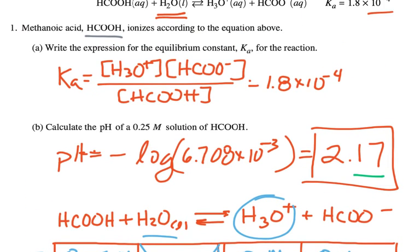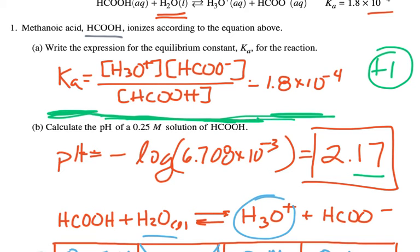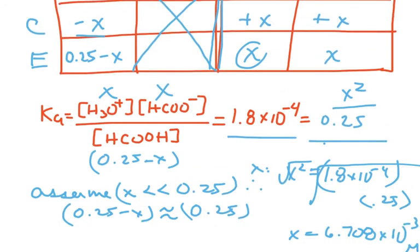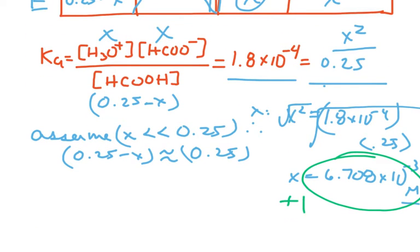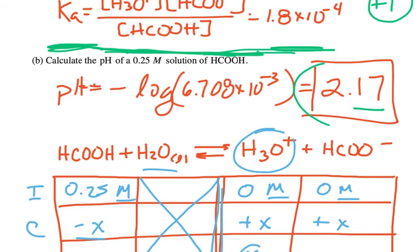Now, going back for this first part here, the part A, this is worth one point for getting this expression. And notice you do need to say Ka equals this. Don't just put these bracket ones. You need the Ka equals this or this expression equals this. You need to show that it's an expression. Second part is two points for getting to this 2.17. You get one point for getting to this number. And then you get a second point for turning it into the pH. So we've had three points so far. If a reader were grading this and they saw your work, if they saw 2.17, they would give you both points right away. Now notice I did not round off this number because it's in the middle of the problem.